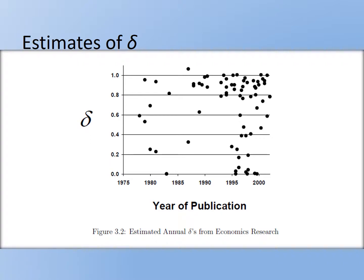Delta is not hard to estimate because, given the formula where you basically have a linear equation, as long as you have a limited number of periods, you can put the future income into an OLS regression and get an estimate of the various deltas, then back out what delta should be. Or, if you want to do it in one go, you can do what's called a nonlinear least squares, which gives you an estimate of delta directly. Even in cases where you have indefinite periods of return, if they are stable, you can just use the geometric formula to back out what delta is. Delta is relatively easy to estimate.